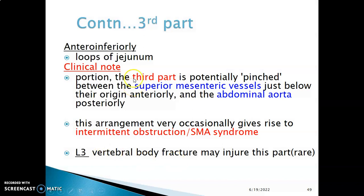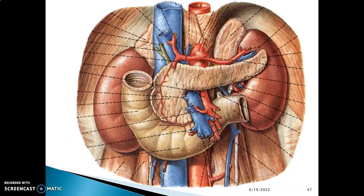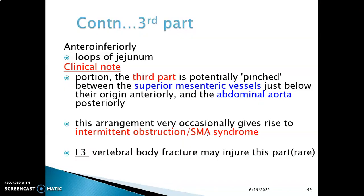The applied aspects of the third part of the duodenum: the third part is potentially compressed between the superior mesenteric vessels anteriorly and the abdominal aorta posteriorly, which leads to superior mesenteric artery syndrome — an intermittent obstruction of the third part of the duodenum. Also, this third part is at the level of L3 vertebra, so trauma to L3 may injure this portion of the duodenum, although this is very rare.